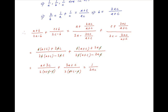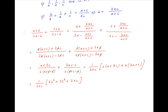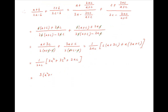This simplifies to 1/(2ac) times [c(a + 3c) + a(3a + c)], which equals 1/(2ac) times (3a² + 3c² + 2ac), and can be written as [3(a² + c²) + 2ac] / (2ac).